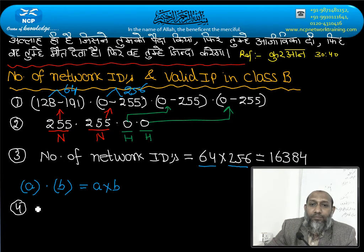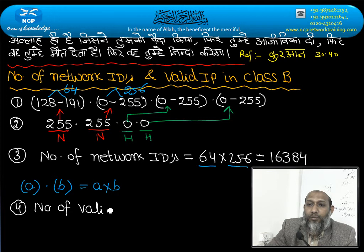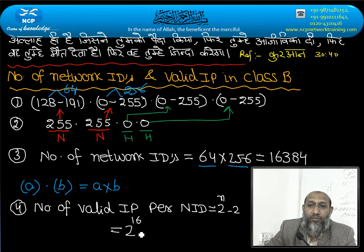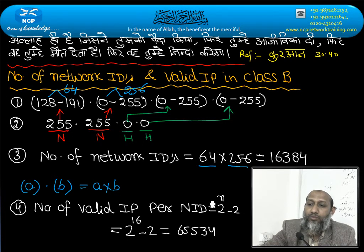Step number four. Number of valid IP per NID. How much of NID in each NID? The formula is called 2^N-2. How much value is N? How much value of class B? 16 minus 2. How much will it? 65,536 should be minus 2. How much will happen? 65,534 if we can see.